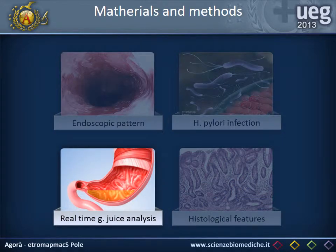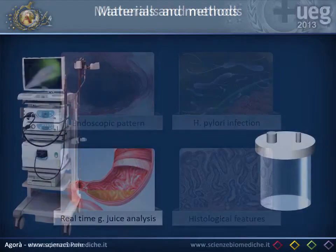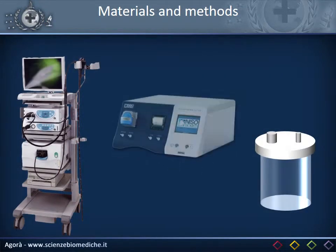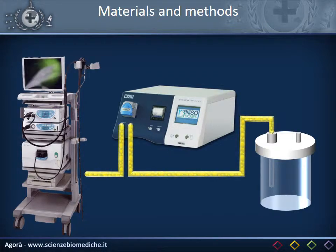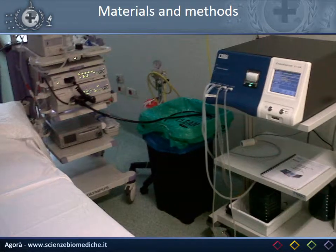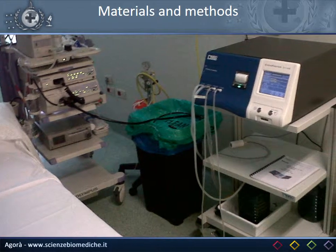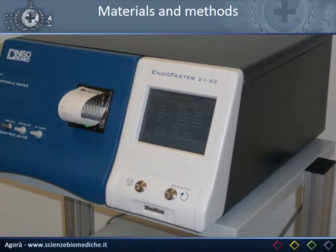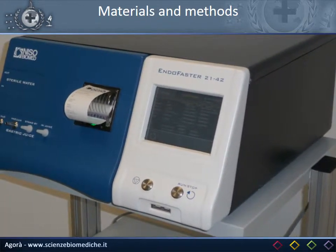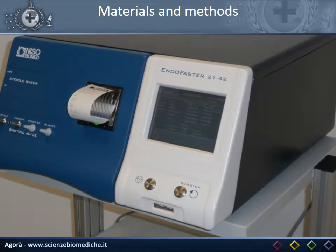As to real-time gastric juice analysis, it was performed by using Endofaster, an innovative device that, interposing between the endoscope and the suction system, performs an ultra-fast analysis. By evaluating the pH and the ammonium concentration in real-time, it allows the detection of hypochlorhydric conditions and H. pylori infection.